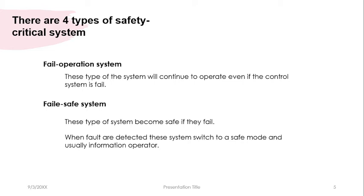The second type is the Fail-Safe System. This type of system becomes safe if it fails. When faults are detected, this system leads to a safe mode and useful information operation. An example is trains: in case of a sudden emergency, they will come to a full stop but remain safely stationary. It's similar to brakes in vehicles — when there is a traffic collision, you can brake immediately.